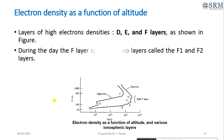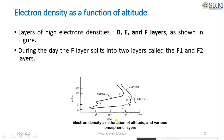The different layers of ionospheric densities are called the D, E, and F layers, with the F layer split into F1 and F2. Free electron densities on the order of 10 to the power 10 to 10 to the power 12 electrons per cubic meter are produced by ionization from the sun's rays.